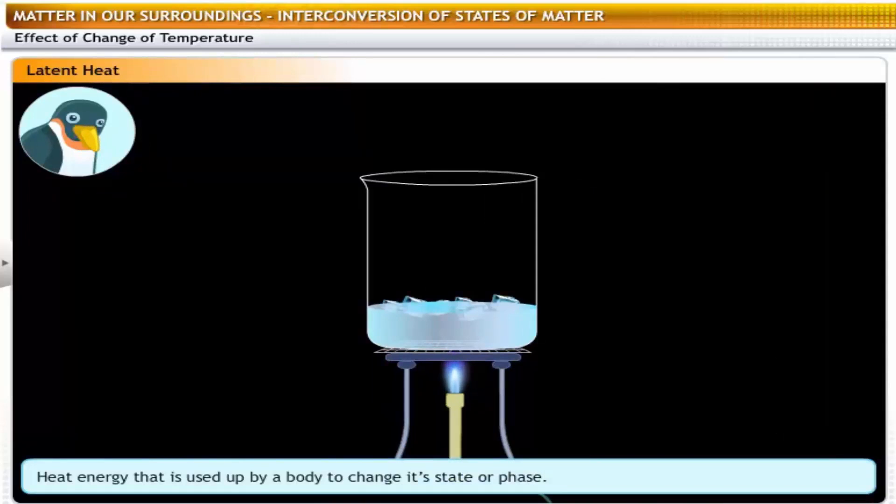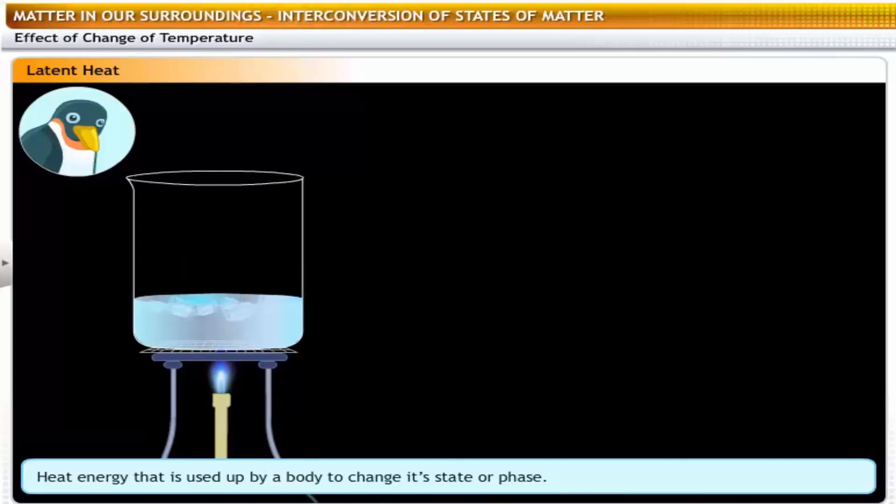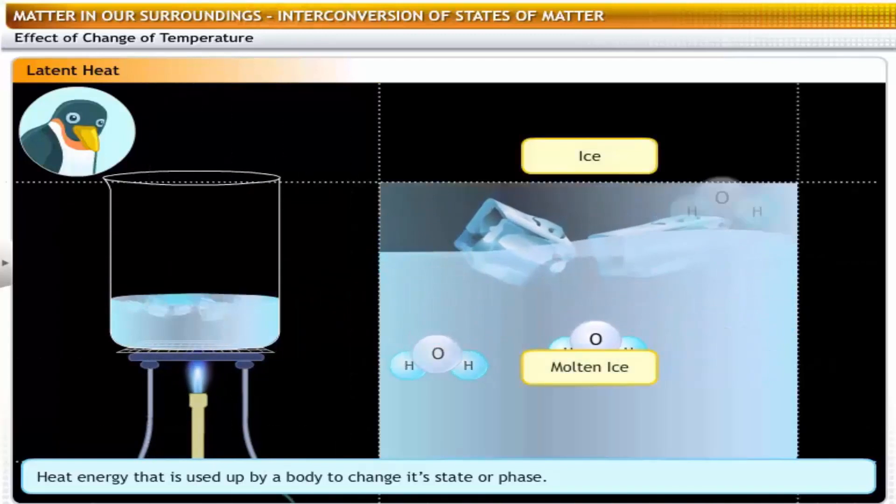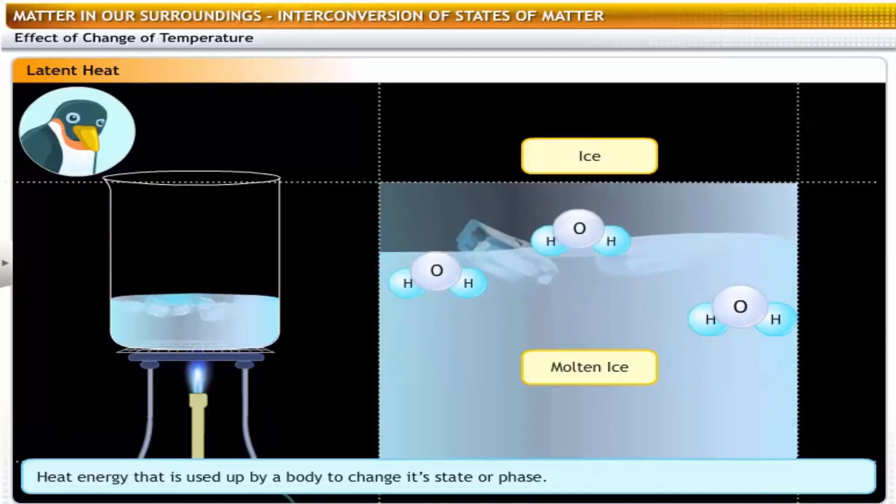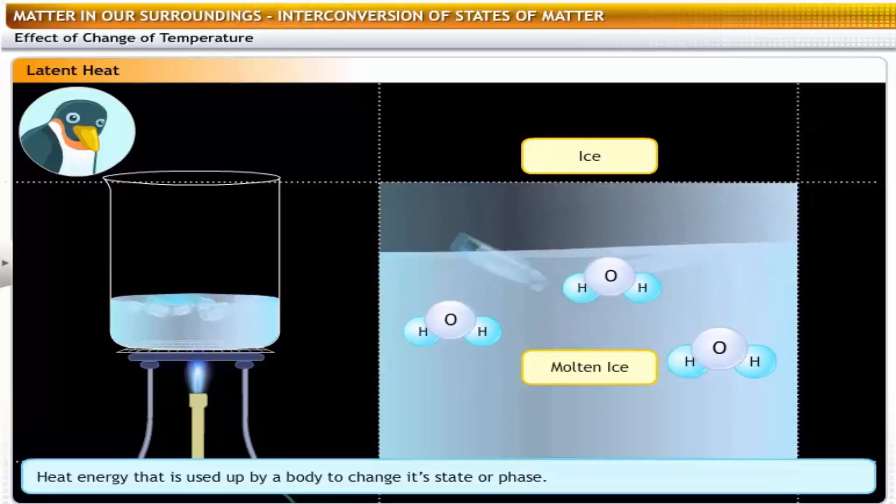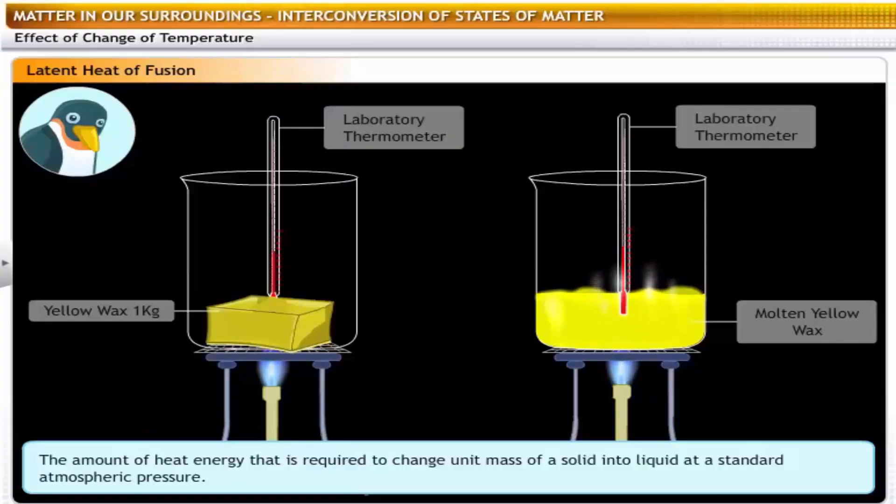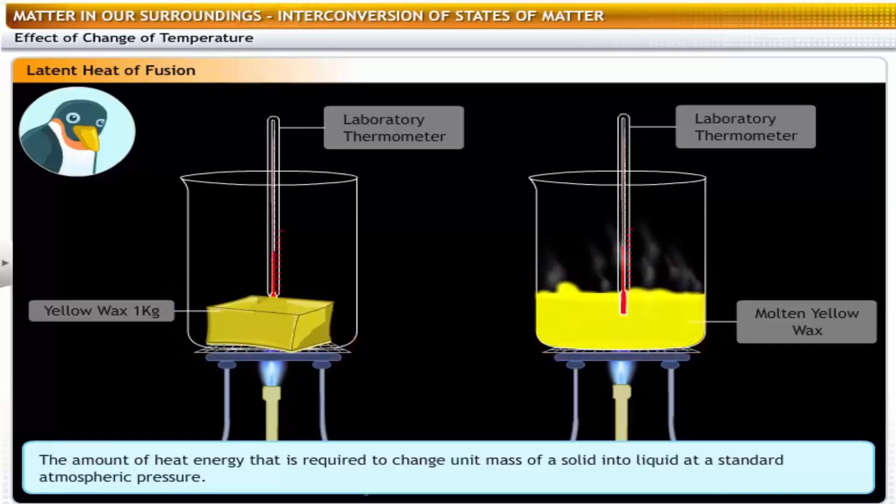Heat energy is used up in changing the state of matter. In our experiment, the heat is used to increase the kinetic energy of the particles of ice to such an extent that they break away from the rigid lattice structure of the solid form, ice, and move around freely to form the liquid form, water. So, until all the ice has melted, the heat absorbed does not raise the temperature of the ice water mixture. This heat which does not raise the temperature of the body is called latent heat. The latent heat of fusion for any substance is the amount of heat energy required to change one kilogram of the substance from its solid state to its liquid state at the same temperature.